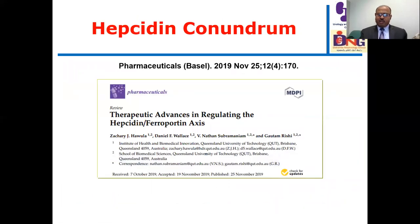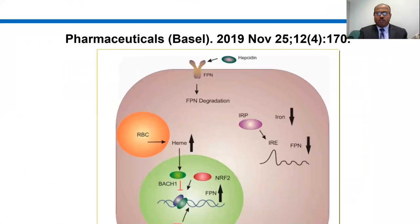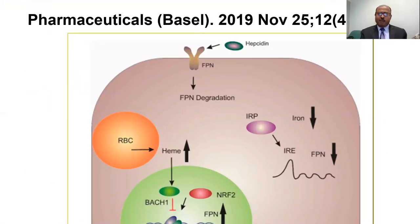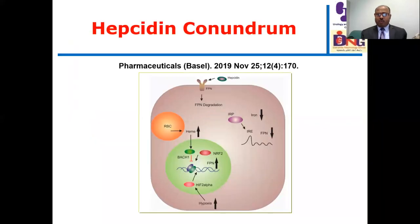The hepcidin conundrum is a very interesting point. Hepcidin is a marker of inflammation, and it interacts with anemia management. Hepcidin binds ferroportin, which is present in the intestine, cells, and reticuloendothelial system. When hepcidin binds ferroportin, it leads to ferroportin degradation, meaning iron is not available for heme synthesis. This results in a block of intestinal iron absorption and release of iron from the reticuloendothelial system, with subsequent resistance to anemia management.